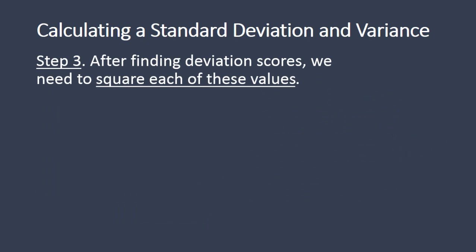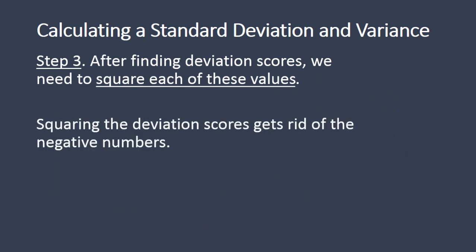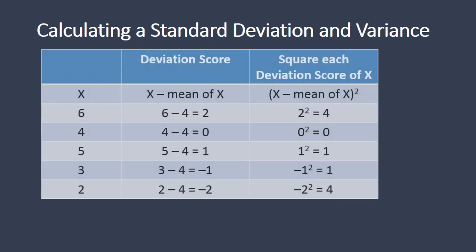After we find the deviation scores, we need to square each of these values. Squaring the deviation scores gets rid of the negative numbers. We're taking the deviation scores and squaring them: 2 squared is 4, 0 squared is 0, 1 squared is 1, negative 1 squared is positive 1, and negative 2 squared is positive 4. Notice how we now have all positive values.